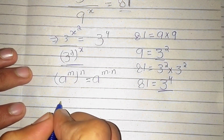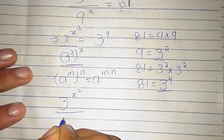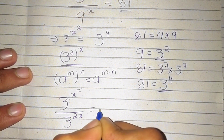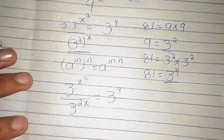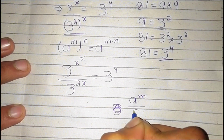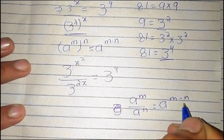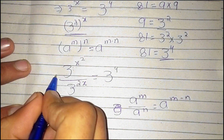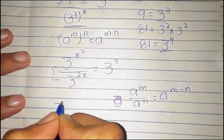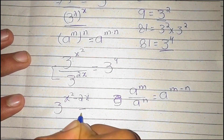Applying this identity, the equation becomes 3 power x squared divided by 3 power 2x, is equal to 3 power 4. We have the exponential law that a power m divided by a power n is equal to a power m minus n.